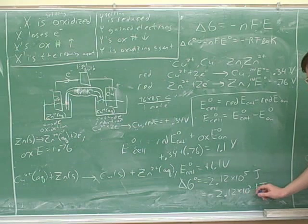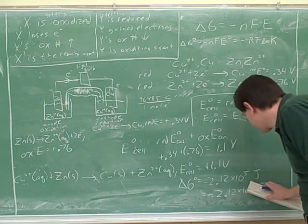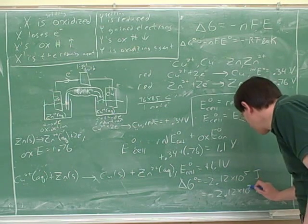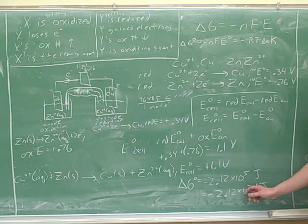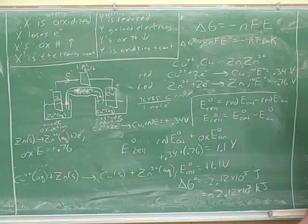So it would be 2.12 times 10 to the, no, 10 squared. This is actually such a small number that maybe we wouldn't use scientific notation for this. What's this as a regular number?